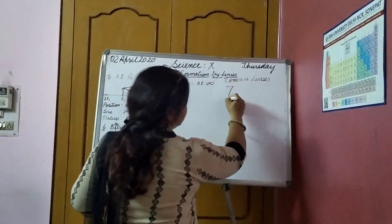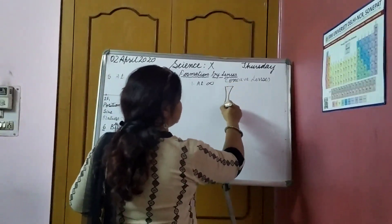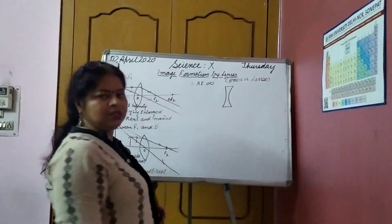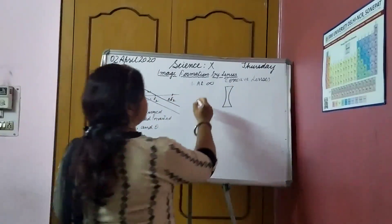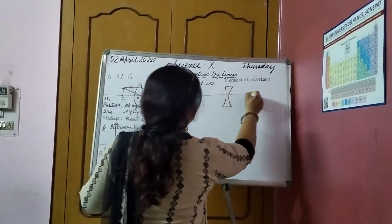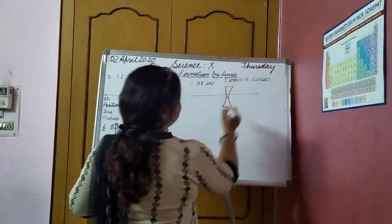Do you remember what is the shape of the concave lens? It is thicker at the edges and thinner in the center or the middle. Principal axis. This is optical center.